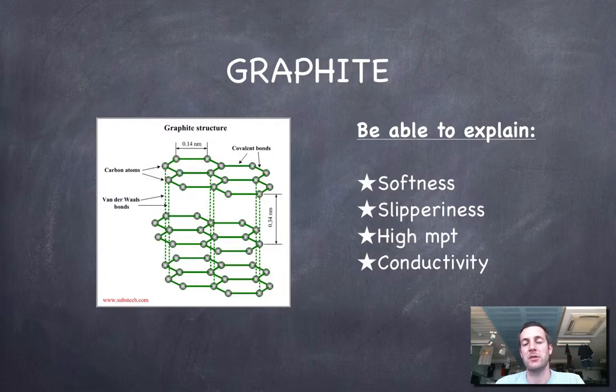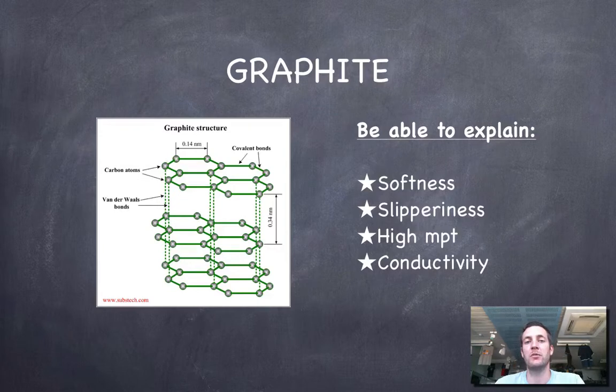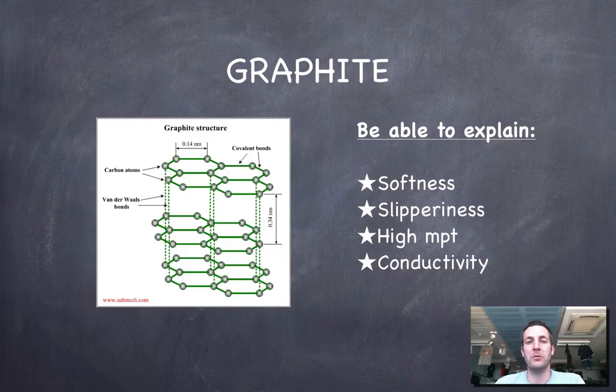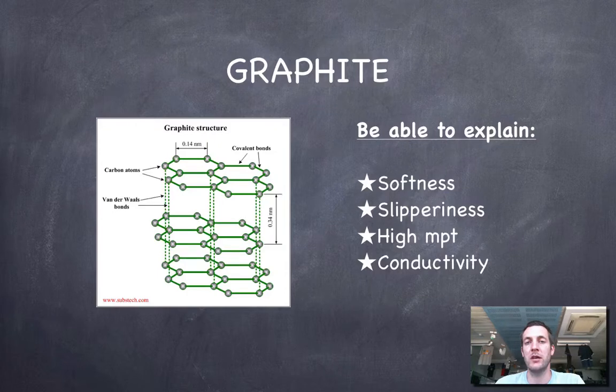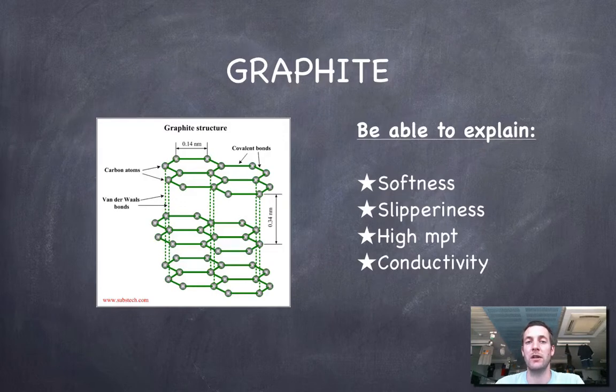We'll start with graphite, which is the more common one. You wouldn't be as excited if you found some graphite as if you found a diamond. What you need to be able to explain about graphite is why it's so soft, why it's so slippery, why it's got such a high melting point, and why it conducts electricity, which is extremely unusual for a covalent substance.